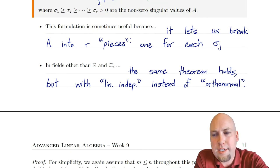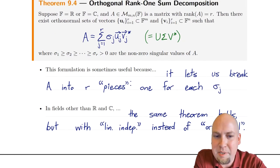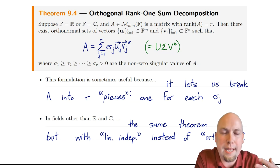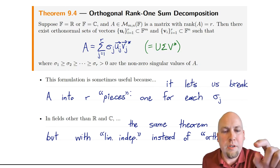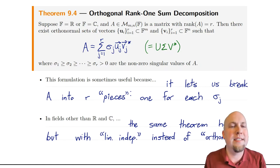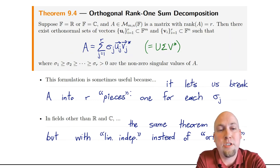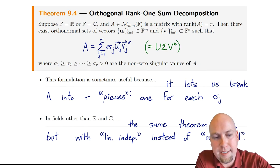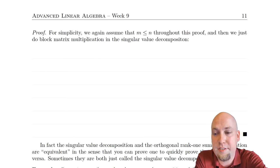In fields other than R and C, it turns out the same theorem holds — not quite the exact same, because you don't have a notion of orthogonality unless you're over a field like R or C where you have inner products. But over general vector spaces and general fields, you can still have the same theorem as long as you don't require orthogonality. If you just want linearly independent sets, then it's still true. So the orthogonality really is what the singular value decomposition gets you here.